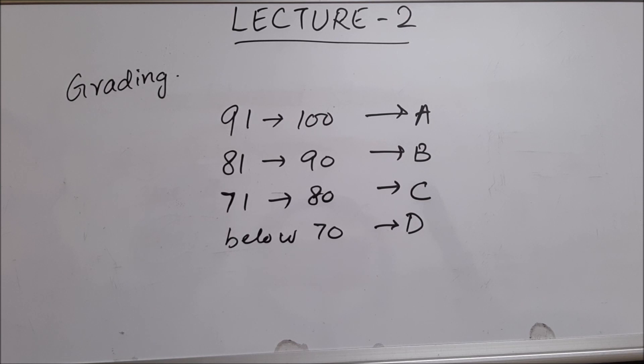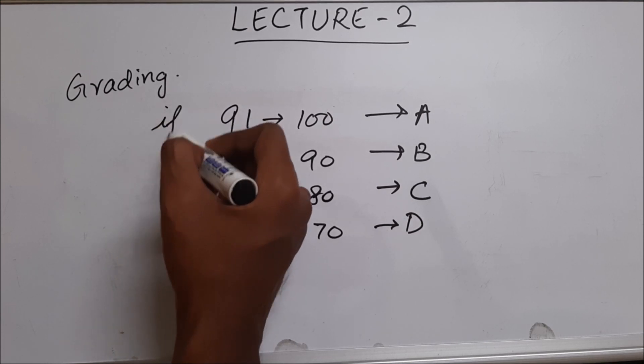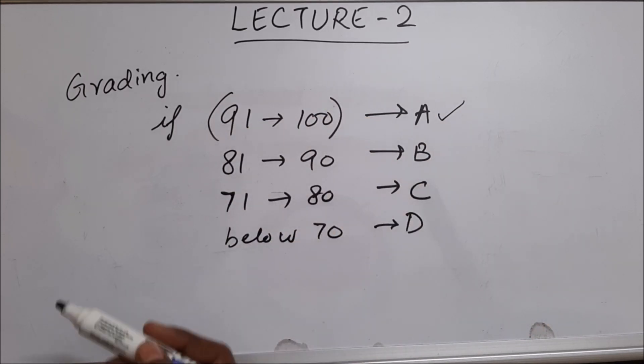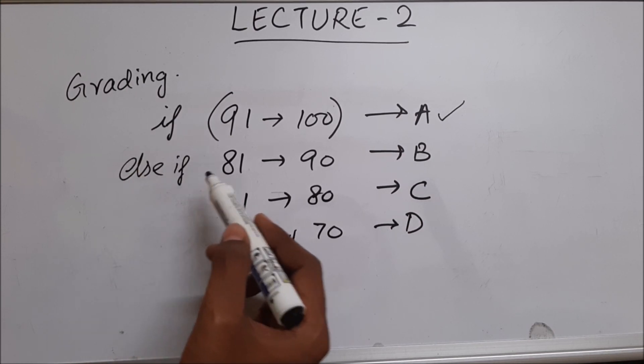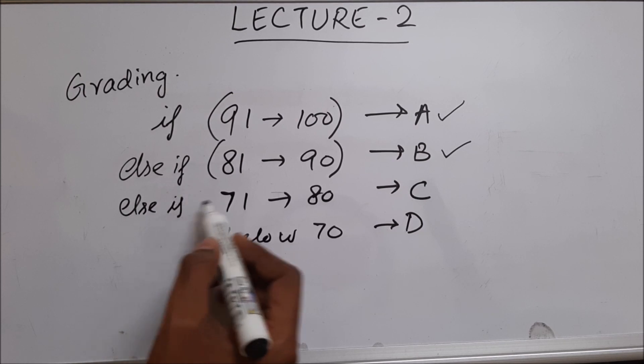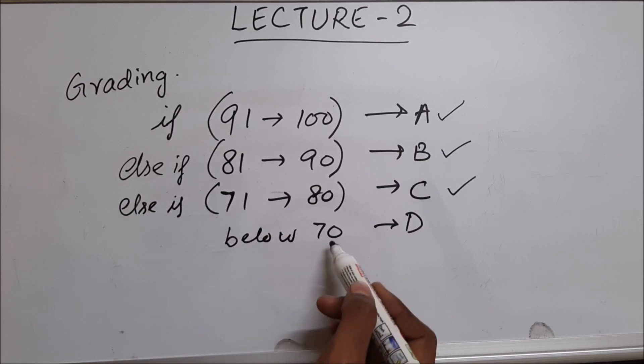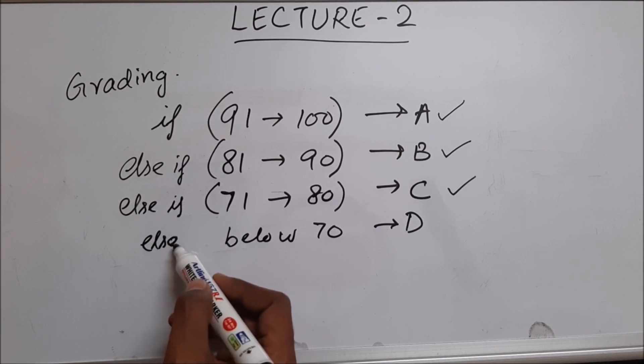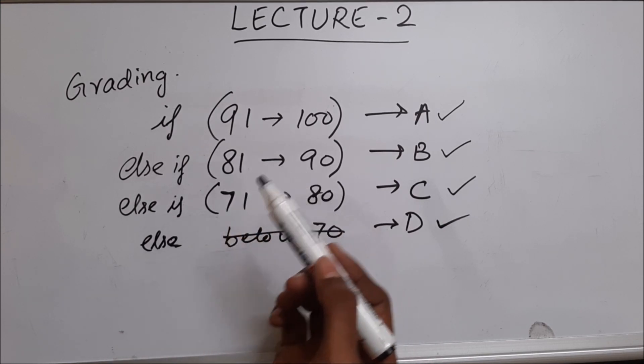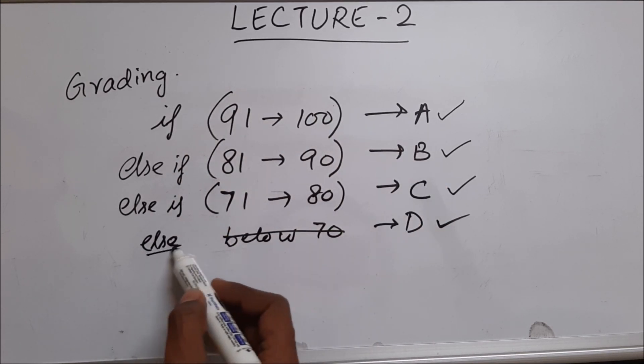In this situation let me explain how I'm going to use if, else if, and else. I'll say if the marks is between 90 and 100 then the grade is A. Else if the grade is between 81 and 90, the grade is B. Else if the marks is in the range of 71 to 80, the grade is C. And everything below 70, I'm going to put else. I'll say else it is D. I need not even put this condition. Else means anything other than all of these.